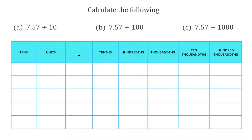For this first example, we've got 7.57 divided by 10. I'm going to start by writing 7.57 in the place value diagram. So we've got 7 in the units, my decimal point here, then 5 in the tenths and 7 in the hundredths.